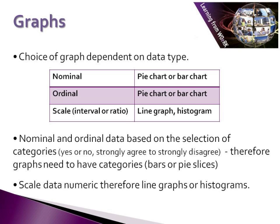Nominal and ordinal data is based on the selection of categories, so whether that's a yes or a no, or whether that's a strongly agree to strongly disagree. Therefore, our graphs that represent nominal and ordinal data have to have categories, so that generally comes in the form of either bars or pie slices. Scale data, which we know as being either interval or ratio, is numeric, and therefore this is best represented by things like line graphs and histograms.